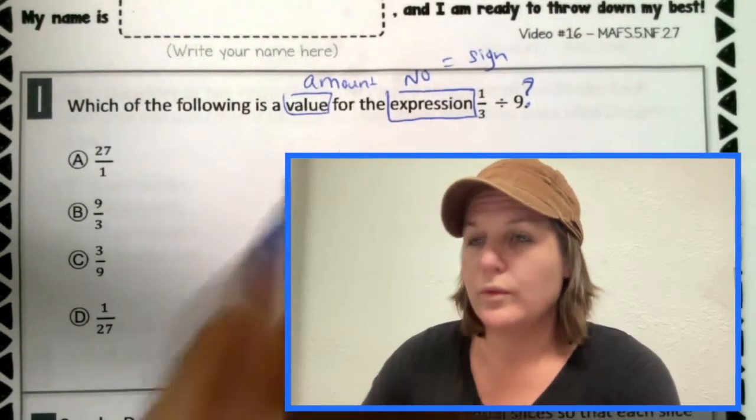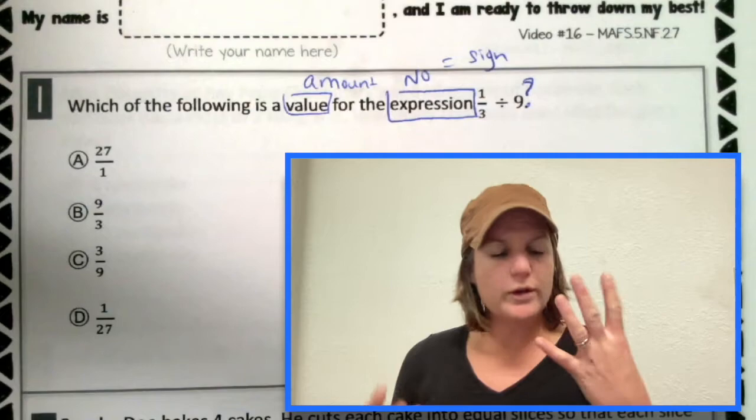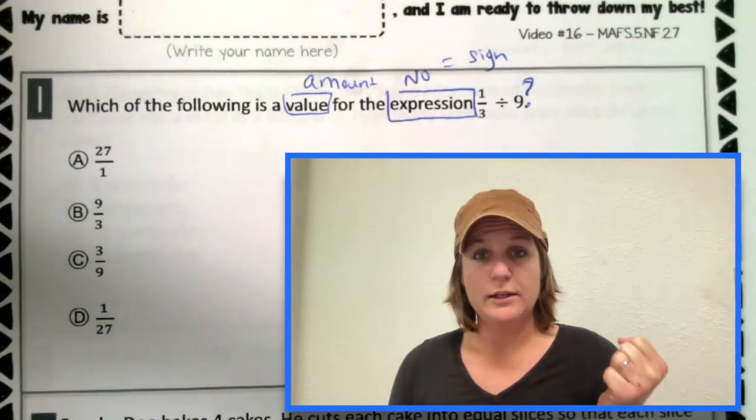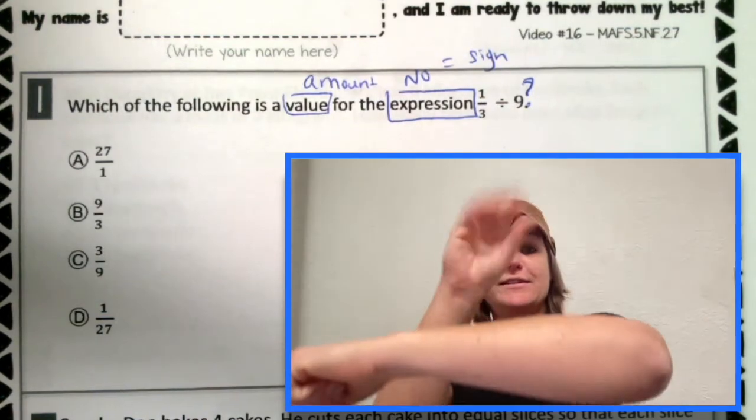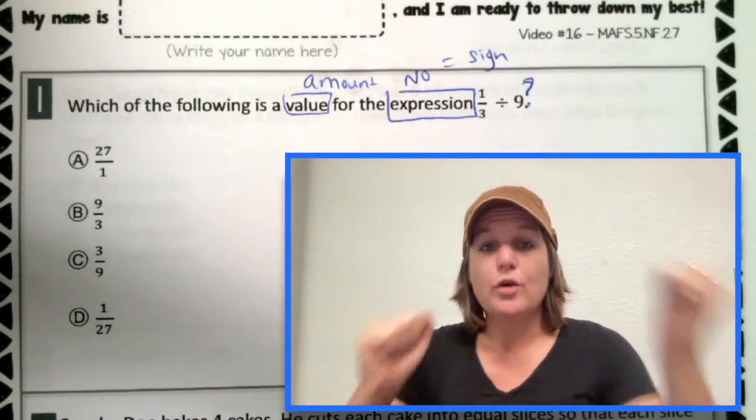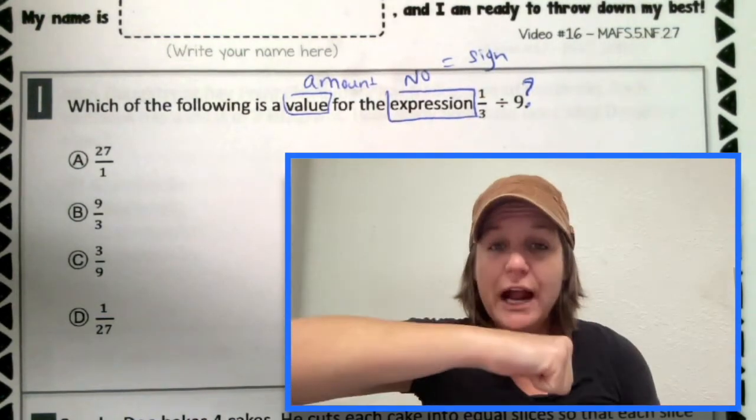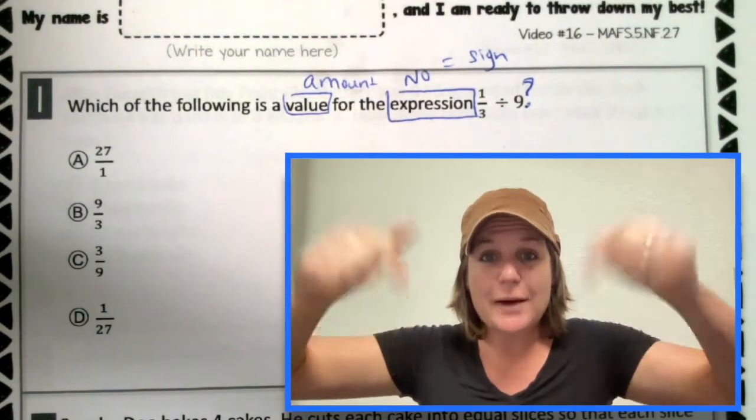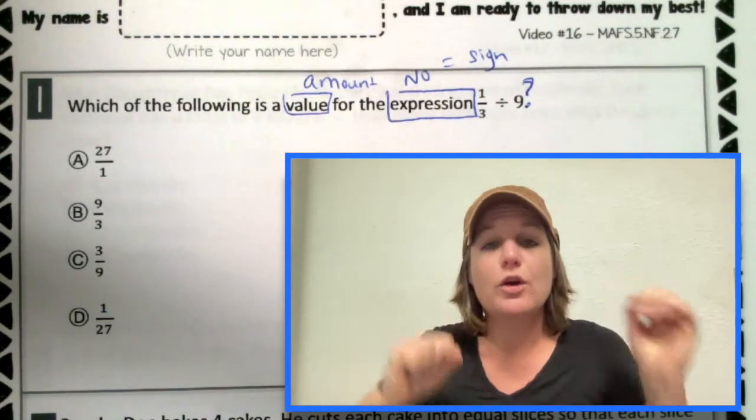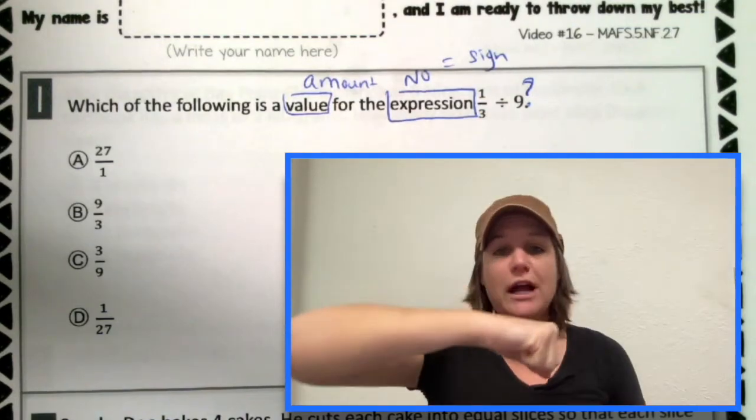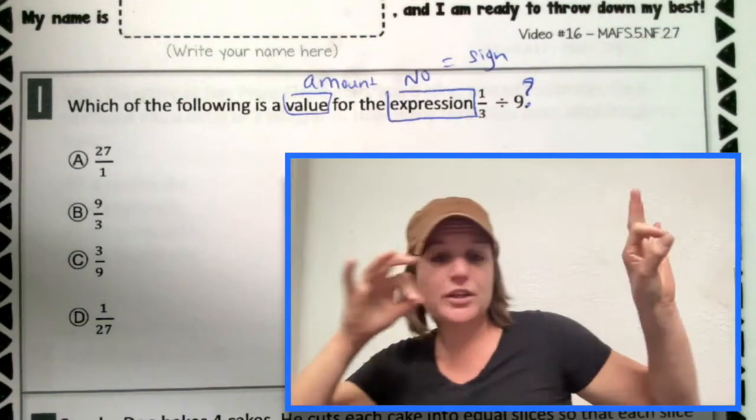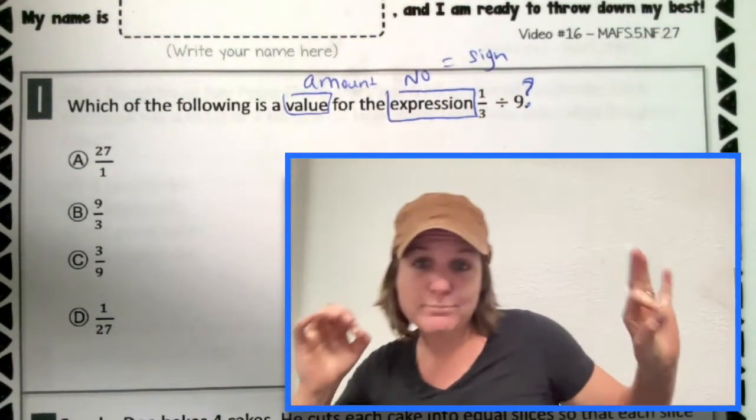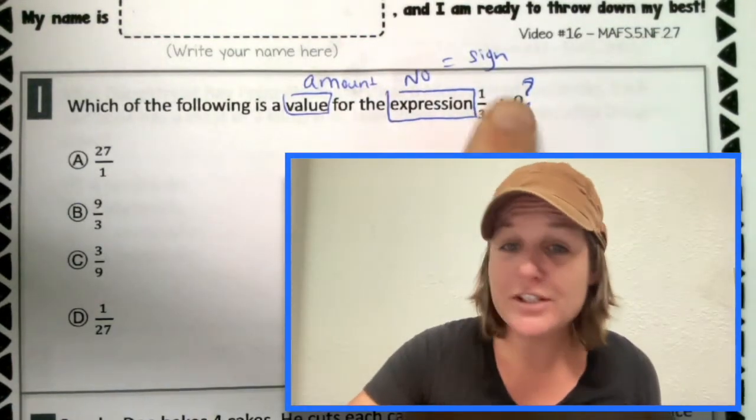So with fractions, we have four different operations that we could do, right? We add, subtract, multiply, and divide. Now, when you add or subtract fractions, your denominators must match. When you multiply, you just flag across and multiply. But here is division.